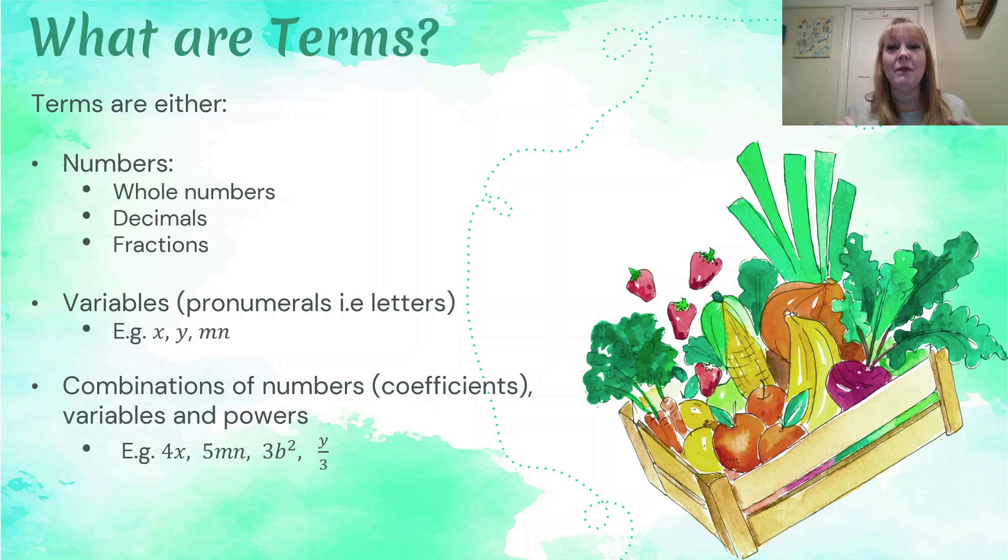We've got 5mn, we've got two letters now joined together. That's another type of term. We've got 3b squared, for example, which is a power with a number and a letter. And we've also got fractions as well. So these are all different kinds of things. Any combinations of letters and numbers, or letters by themselves, or numbers by themselves, are all called terms. Whenever you're thinking about terms, you're just thinking about algebra combinations.